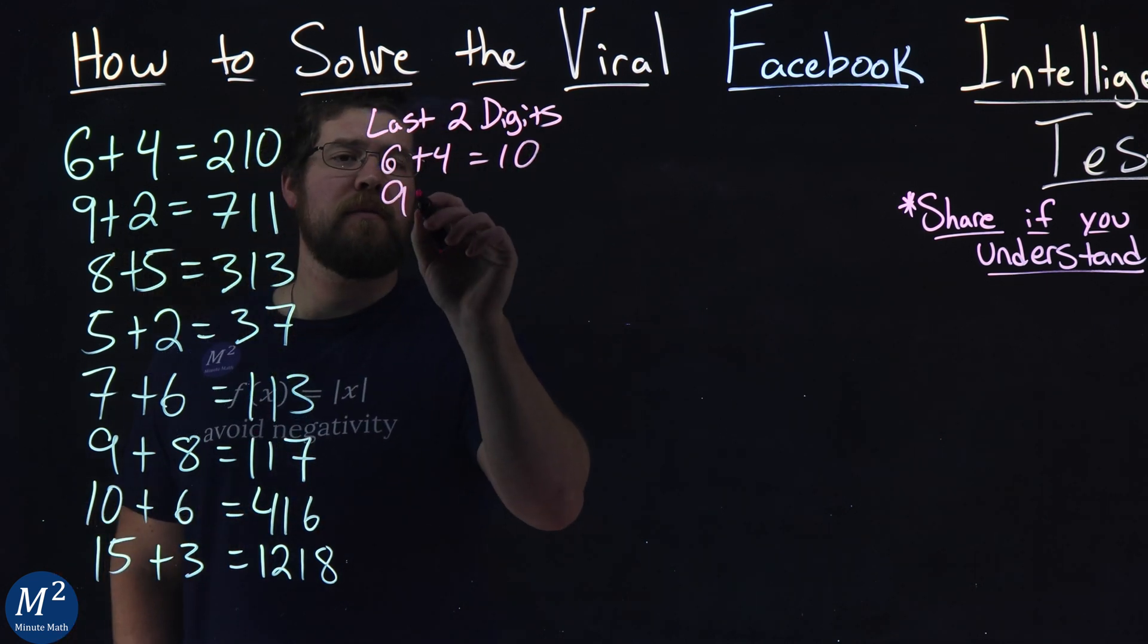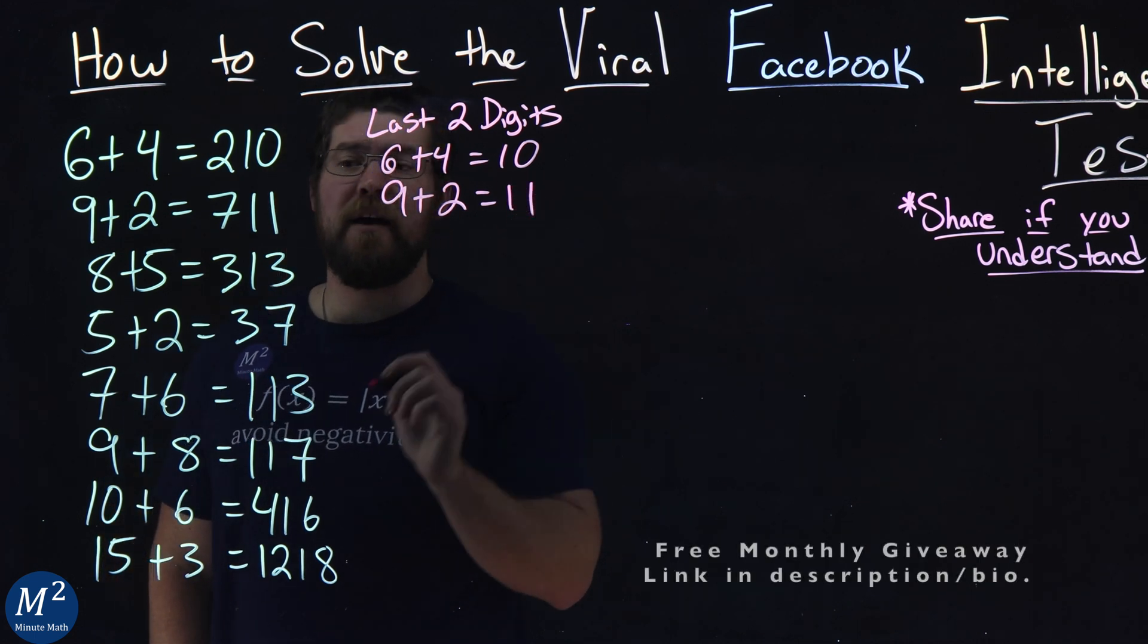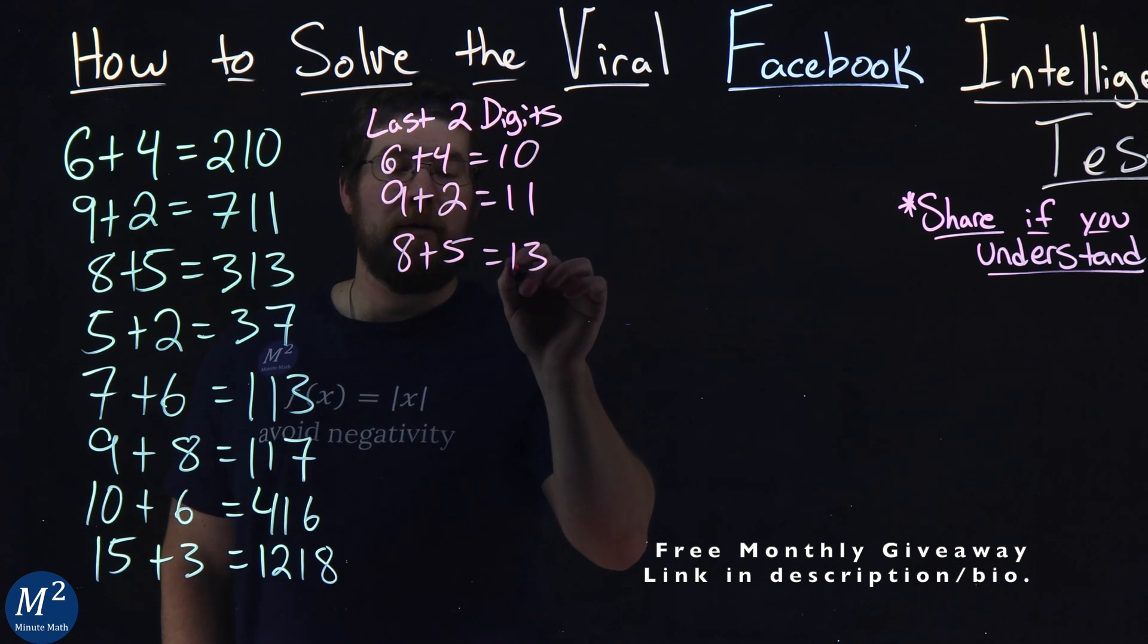A 9 plus 2, really just rewriting this gives me the last two digits, which are 11. 8 plus 5 gives me the last two digits, which is a 13.